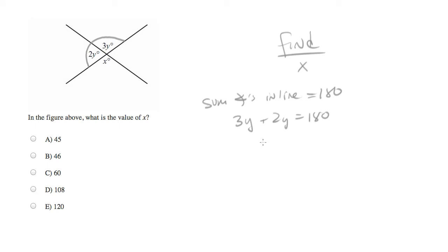And we can use this to solve for Y, because we'll have 5Y equals 180. You can divide both sides by 5. And what we'll end up with is Y equals, I'm not sure what 180 over 5 is, that's 36.